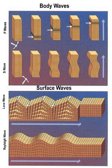Primary waves are compressional waves that are longitudinal in nature. P waves are pressure waves that travel faster than other waves through the Earth to arrive at seismograph stations first, hence the name primary. These waves can travel through any type of material, including fluids, and can travel nearly 1.7 times faster than S waves. In air, they take the form of sound waves, hence they travel at the speed of sound. Typical speeds are 330 m/s in air, 1,450 m/s in water, and about 5,000 m/s in granite.